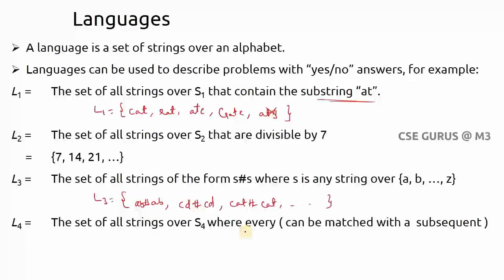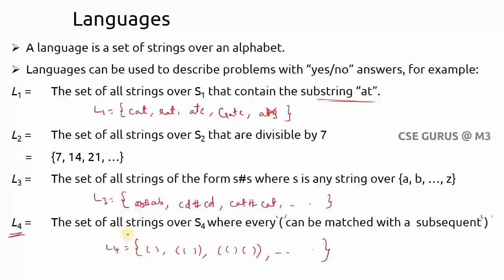L4 is the set of all strings over Σ4 (open and close braces) where every open brace is matched with a subsequent close brace — so strings like '()' and '(())' belong to L4. This gives you an understanding of how formal languages are defined. These are the basic concepts of alphabets, strings, and languages. In the next lecture we will slowly move into the concepts of automata theory.